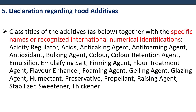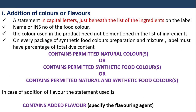Declaration regarding food additives: Class titles of the additives together with the specific names or recognized international numerical identifications (INS numbers) shall be declared. For addition of colors or flavors, a statement in capital letters shall be placed just before the list of the ingredients on the label, giving the name or INS number.